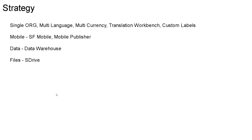Coming to the strategy part, I recommend going with a single org since I do not see different business processes or organizations. I recommend going with multi-language since there is a need to support English and French. I would be enabling multi-currencies where I'll set USD as the corporate currency and add the Canadian dollar as another currency. I recommend going with Translation Workbench and custom labels.